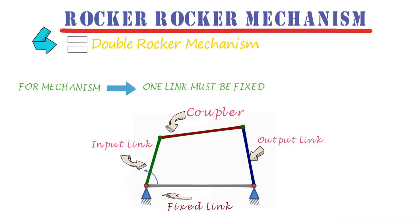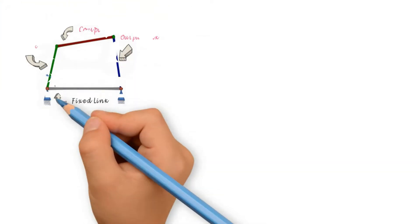We call it Rocker-Rocker Mechanism or Double Rocker Mechanism. Because both input link and output link oscillate about their instantaneous center.